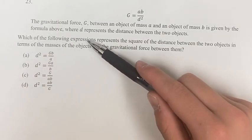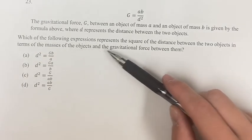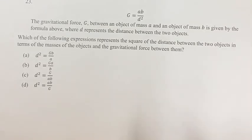We're asked which of the following expressions represents the square of the distance between the two objects in terms of the masses of the objects and the gravitational force between them.